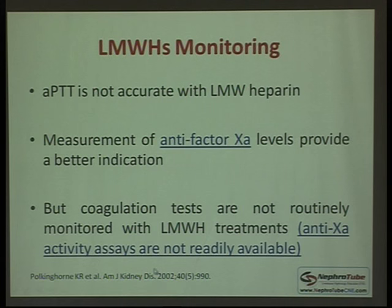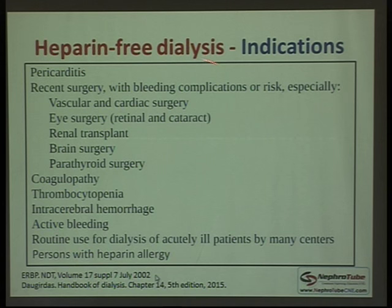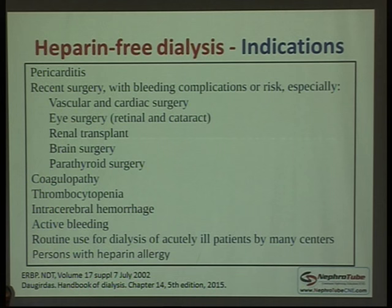One of the most important heparin-related anticoagulation methods is heparin-free dialysis. It is used when the patient has any risk for bleeding — for example, pericarditis, recent surgery, coagulopathy, thrombocytopenia, intracranial hemorrhage, or active bleeding. Some centers use heparin-free dialysis routinely for all acute renal failure patients, or patients with heparin allergy, or even for all patients regardless of bleeding risk.